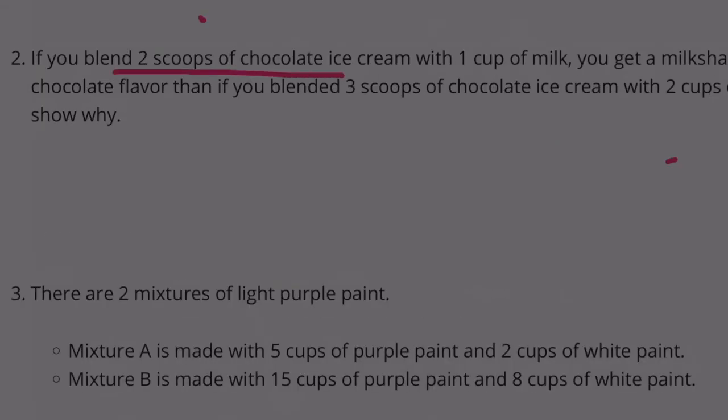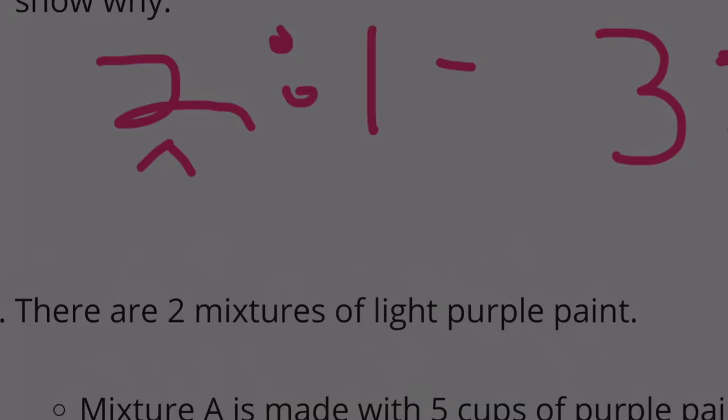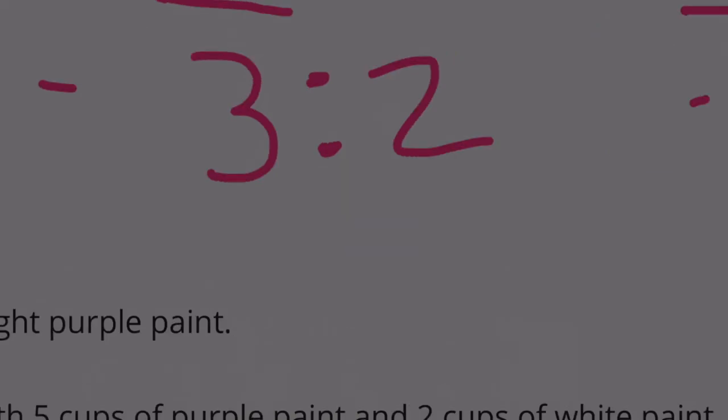2 scoops of chocolate ice cream with 1 scoop of milk. That's a 2 to 1 ratio compared to 3 scoops of chocolate ice cream with 2 cups of milk, 3 to 2. So in this case, you have twice as much ice cream than you do milk. That's going to make the ice cream much stronger.